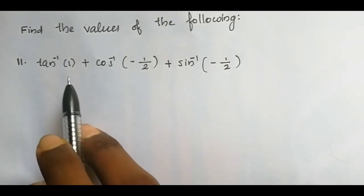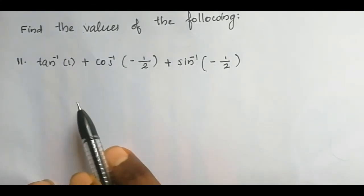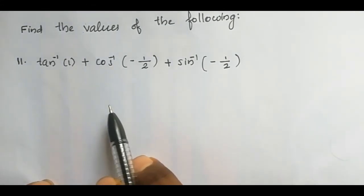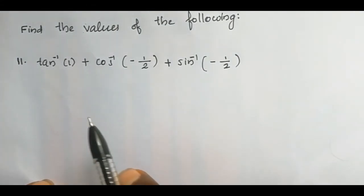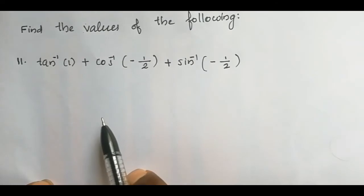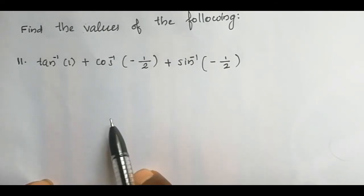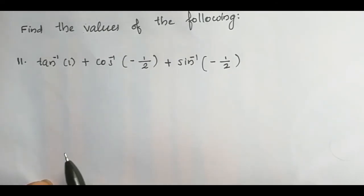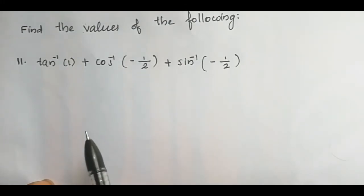Let tan⁻¹(1) = x. Then tan(x) = 1. We know tan(x) = tan(π/4), so x = π/4. Therefore tan⁻¹(1) = π/4.